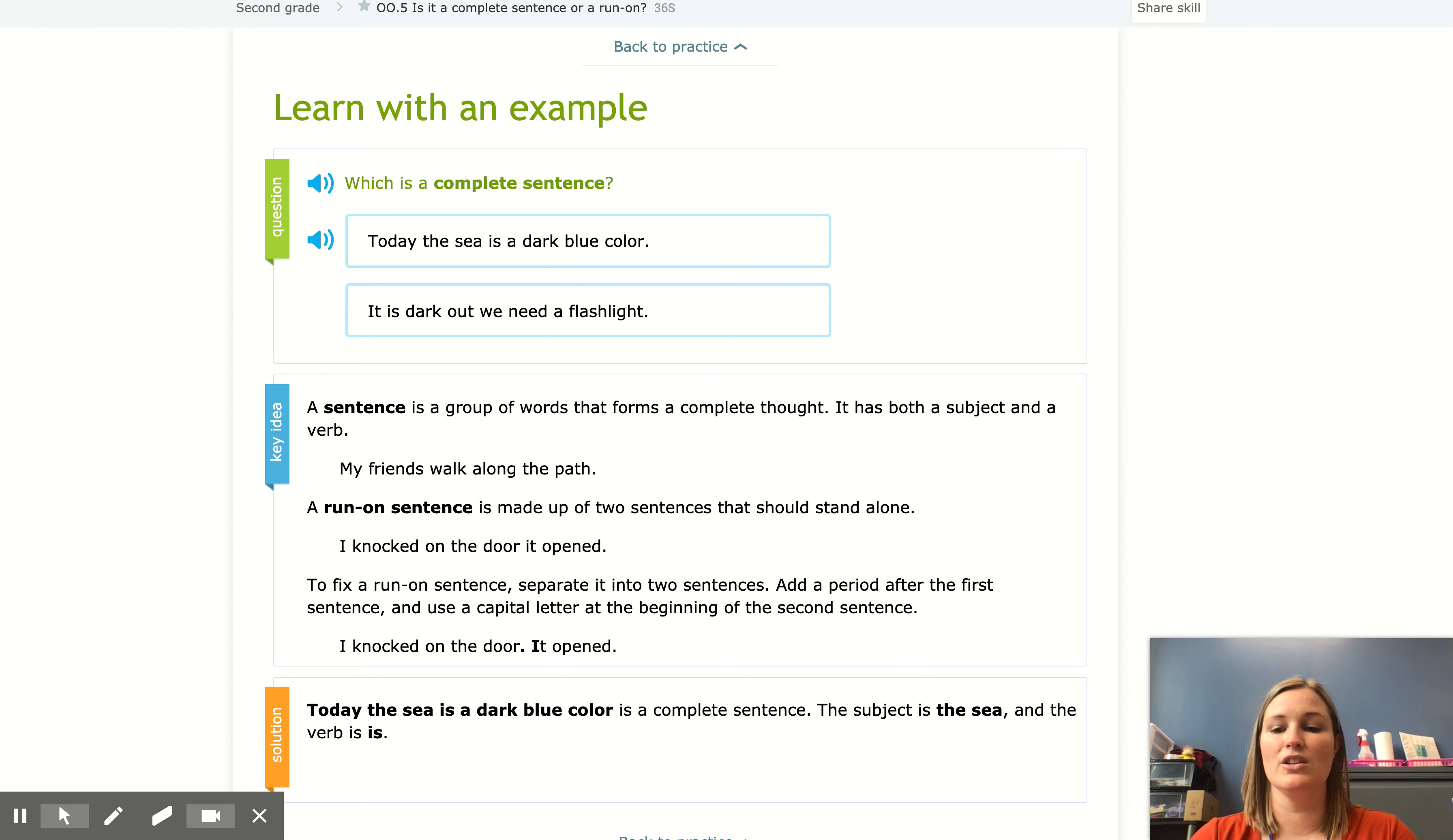So we're going to look at this example real quick. We're looking at which is a complete sentence. So our two options are, I'm reading this one right now, today the sea is a dark blue color. The second one here says it is dark out we need a flashlight.